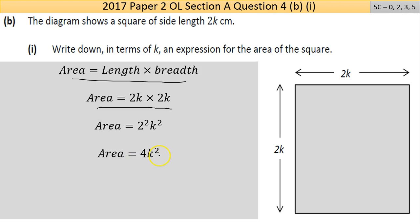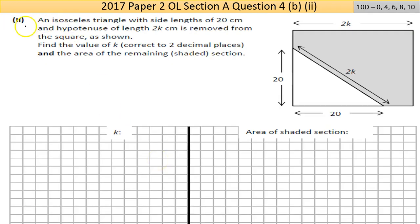Part (ii) shows an isosceles triangle with side lengths of 20 centimeters and hypotenuse of length 2k. That's the right-angled triangle there. Because it's isosceles, these two angles are going to be equal. The question says find the value of k correct to two decimal places and the area of the remaining shaded section. We need to find what k is, then find the shaded section.